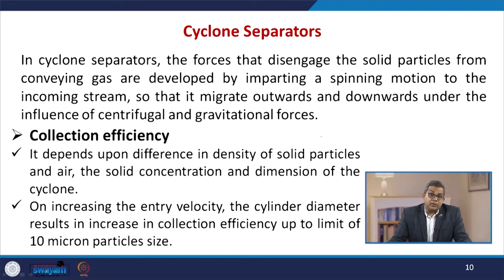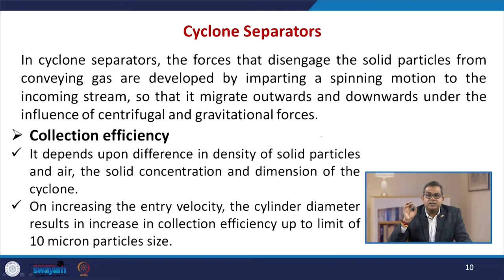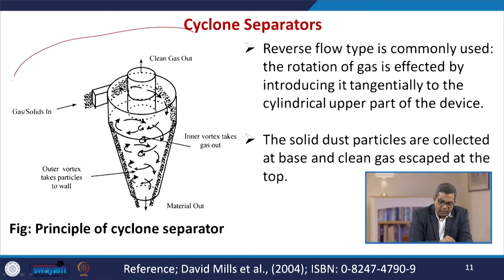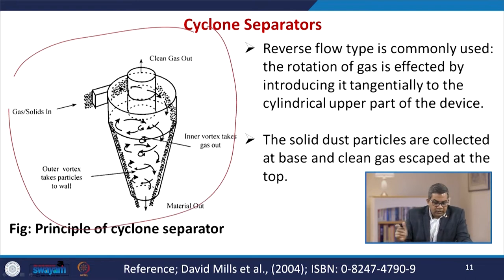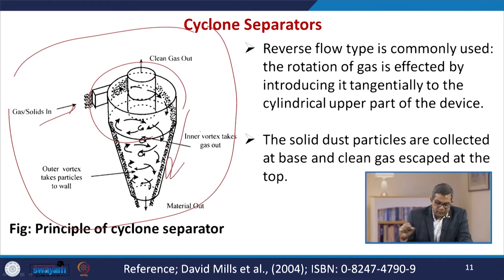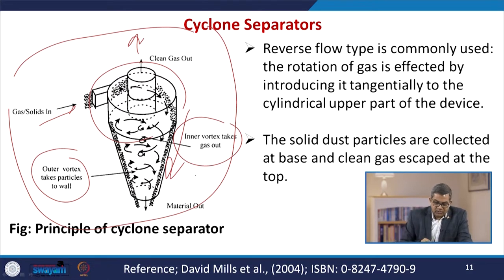The collection efficiency of the cyclone separator depends on the difference in density of the solid particle and air, the solid concentration, and the dimension of the cyclone. Increasing the entry velocity and the cylinder diameter results in an increase in collection efficiency up to a limit of around 10 micron particle size. In the anatomy of the cyclone separator, the gas-solid mixture enters and centrifugal force plus gravitational force are applied. Clean gas exits and there is formation of an inner vortex and an outer vortex — the inner vortex takes the gas out and the outer vortex takes the particles out.